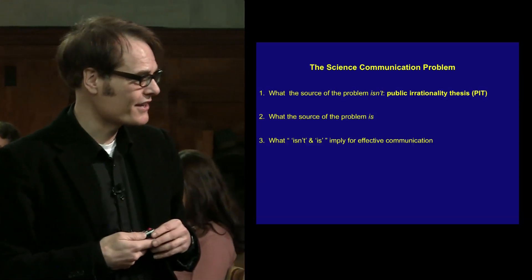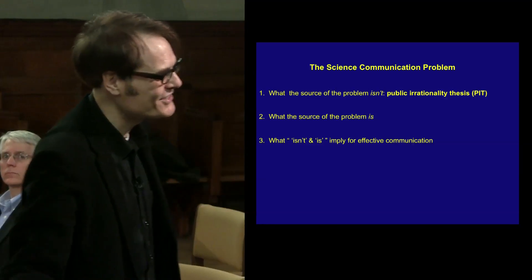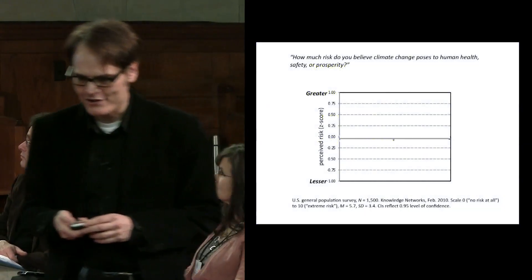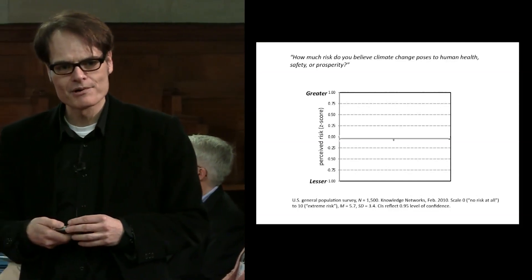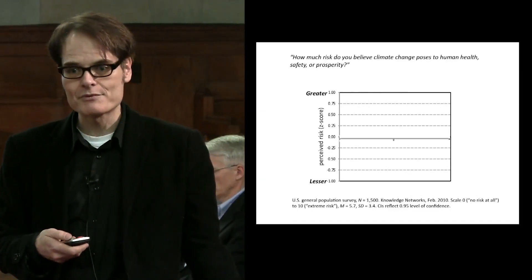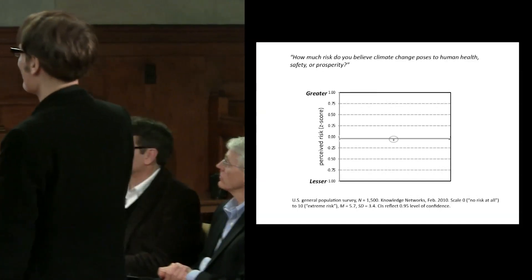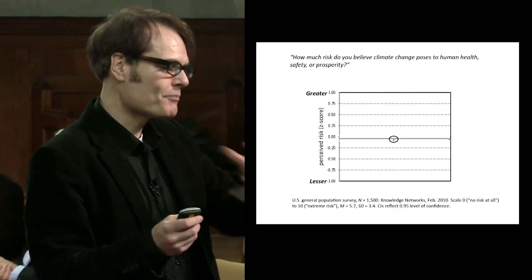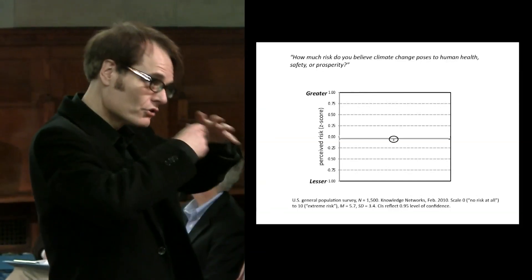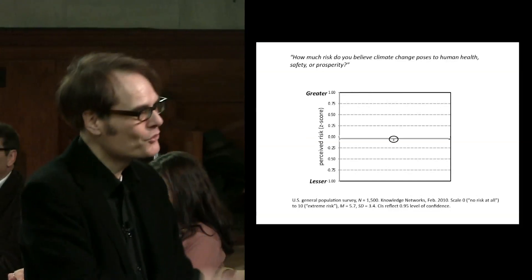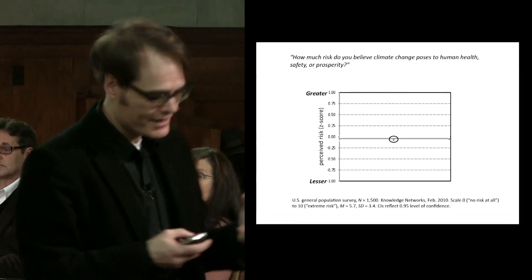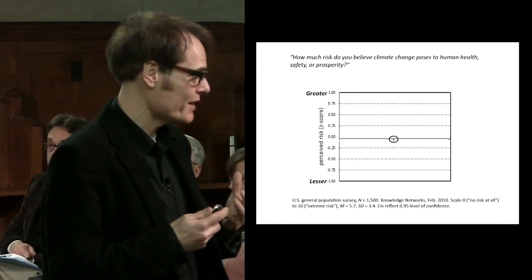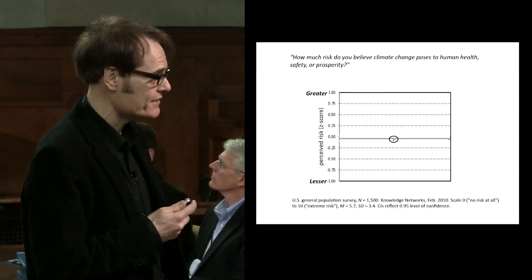Now, that's offered as a conventional explanation of what's going on. But really, it's just a hypothesis. Why shouldn't it be tested with some evidence? So here's some evidence that bears on the public irrationality thesis. We can ask a large nationally representative sample of Americans how seriously they regard climate change risks. I've normalized their response - they actually answered on a scale of one to ten. The point is that you ask a question like this so that you can look at variance and see who is less concerned, who's more concerned, and test hypotheses about why.